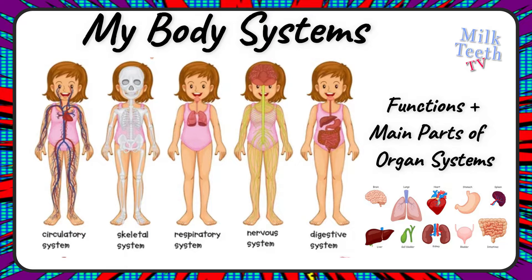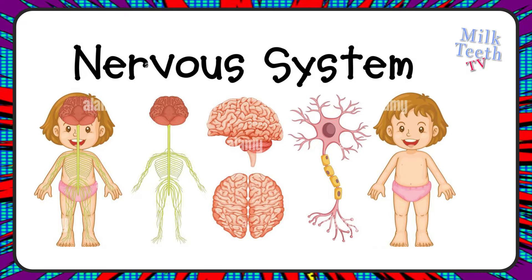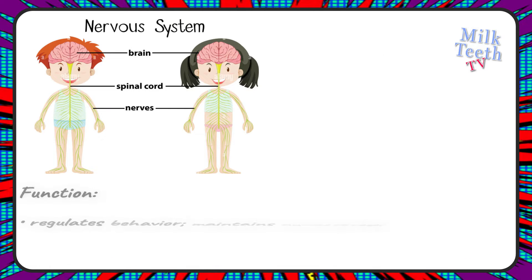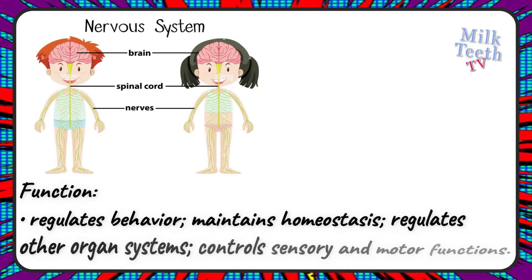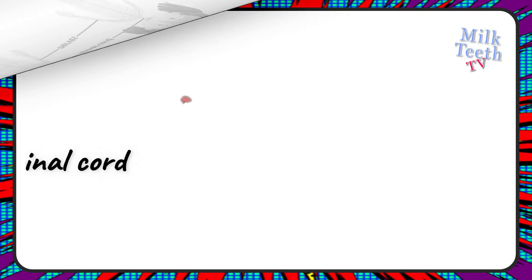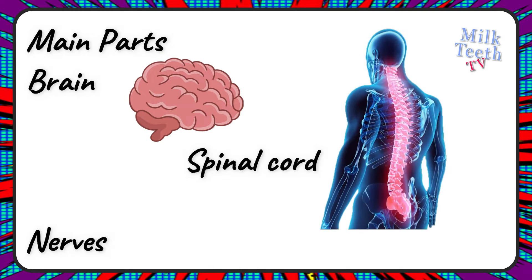My body systems for kids. The nervous system. Functions of the nervous system: regulates behavior, maintains homeostasis, regulates other organ systems, and controls sensory and motor functions in the body. Main parts of the nervous system are the brain, the spinal cord, and the nerves.